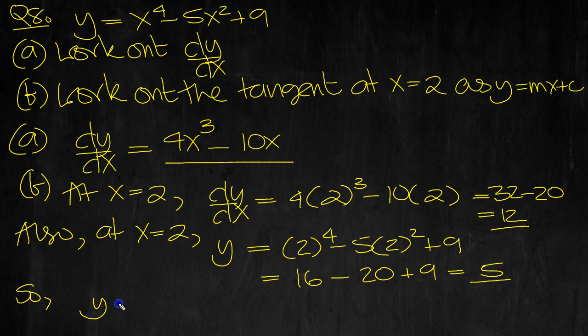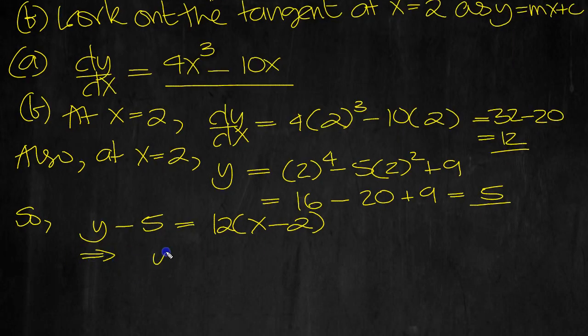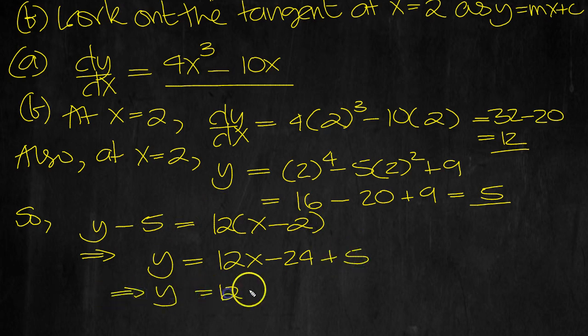So tangent is y minus the y coordinate, which is 5, equals the gradient, 12, x minus the x coordinate at that point, which is 2. So that tells us what y equals then. 12x minus 24, and then move the 5 over plus 5. So we get y equals 12x minus 24 plus 5 is minus 19.